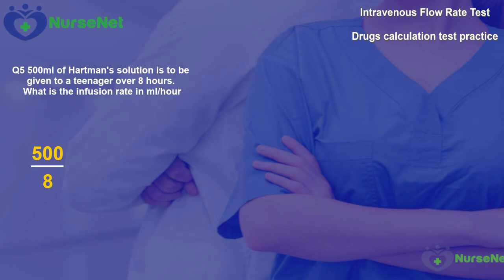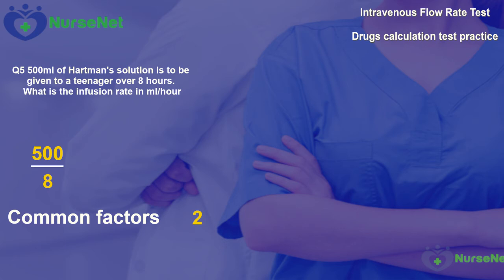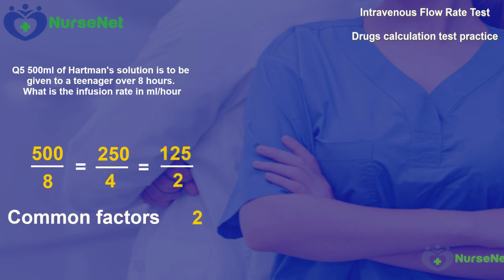Using common factors to simplify: dividing both by 2 gives us 250 over 4. Dividing again by 2 gives us 125 over 2. Dividing once more by 2 gives us 62.5 over 1, so 62.5 millilitres per hour. Rounding to the nearest whole number, our answer is 63 millilitres per hour.